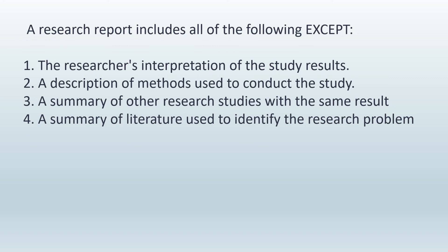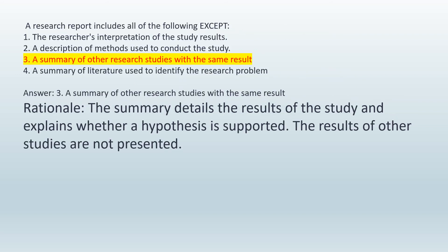A research report includes all of the following except: 1. The researchers' interpretation of the study results. 2. A description of methods used to conduct the study. 3. A summary of other research studies with the same result. 4. A summary of literature used to identify the research problem. Answer: 3. A summary of other research studies with the same result. Rationale: The summary details the results of the study and explains whether a hypothesis is supported. The results of other research studies are not presented.